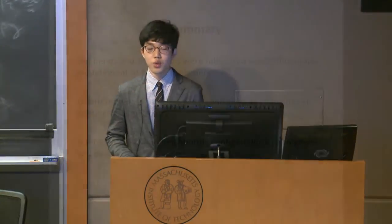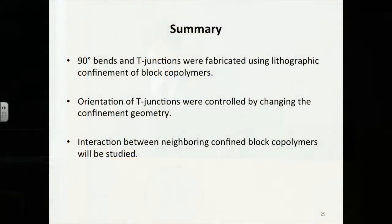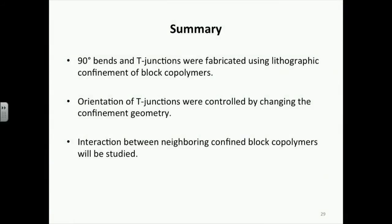In conclusion, we achieved 90-degree bends and T-junctions — as well as any-angled bends and angled T-junctions — using lithographic confinement of block copolymers. We also achieved control of orientation of T-junctions by changing the bending angle or aspect ratio. Future work will study interactions between neighboring confinements by making an opening in the middle of two adjacent square confinements.